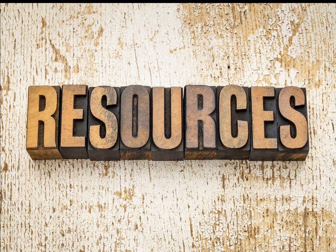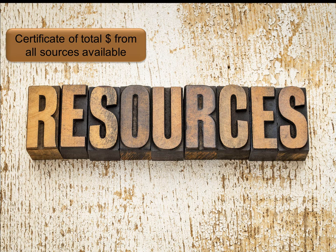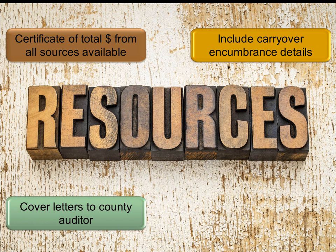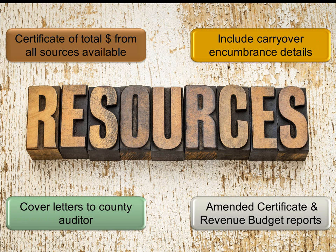Ohio government entities must have certified resources available. The auditor needs to review certifications and what you entered in your books as revenue budgets. In order to pull these pieces together for easy access during your work year and for the audit, I recommend you create an annual resources available file. At the beginning of each year, you send the county auditor the certificate of the total amount from all sources available for expenditures and balances. A copy goes in the file. Include the carryover encumbrance details — that's going to be audited. Include the cover letters to the county auditor and any amended certificates and the revenue budget reports that confirm you have the same numbers in your software. This completes the resources available file.